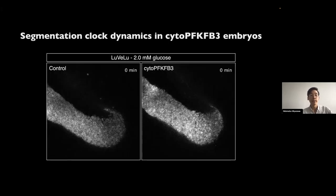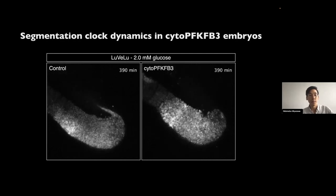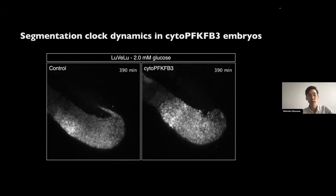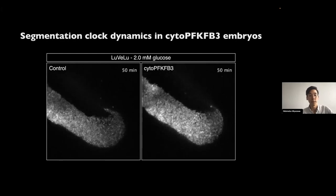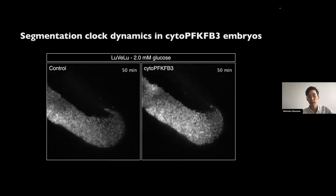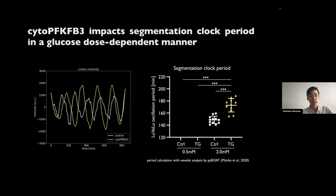I then investigated how cyto-PFKB3 overexpression impacts the segmentation clock dynamics using a Notch signaling reporter. In both control and transgenic, Notch signaling activity was oscillating, showing a wave-like pattern propagating from posterior to anterior — at first glance there was no qualitative difference. But I was excited to find a temporal difference: the transgenic has a 20 percent longer period compared to the control.